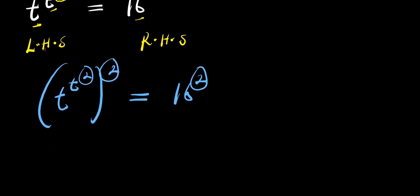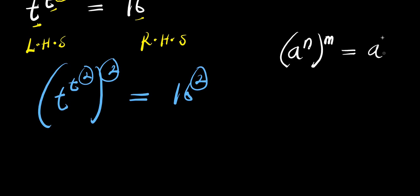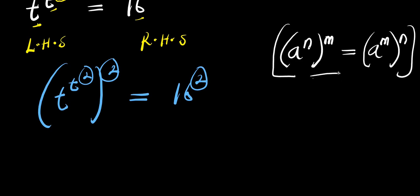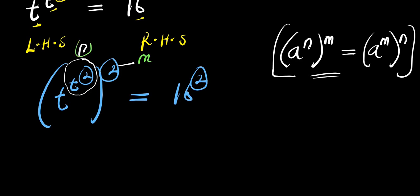That is the first step. The second step will be for us to apply this index law. If you have a to the power of n, and this is raised to the power of n, this equals a to the power of n raised to the power of n. This is an interesting index law, and that is the law we are going to apply here. So we are going to treat this t power 2 as a single step — this will represent our n, and the 2 will represent our m.